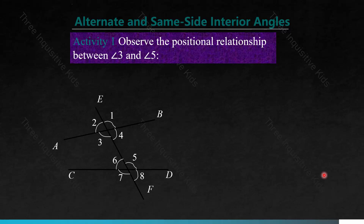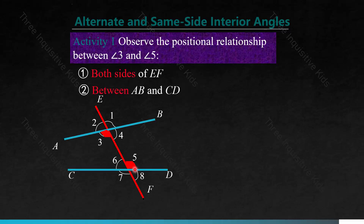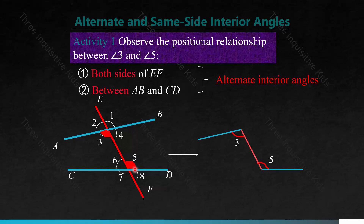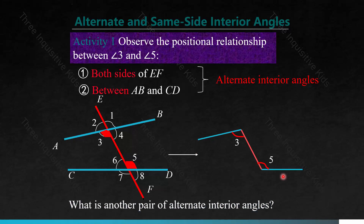Observe the positional relationship between angles 3 and 5. This is angle 3, and this is angle 5. EF, AB, and CD are straight lines. We see that they are on either side of line EF, and that they are between lines AB and CD. These are the angles to look at when spotting alternate interior angles — if we simplify it, we have a Z-like figure. Another pair of alternate interior angles would be angles 4 and 6 — it's still a Z, just flipped the other way.